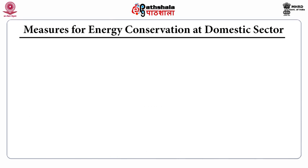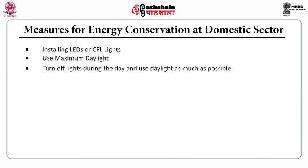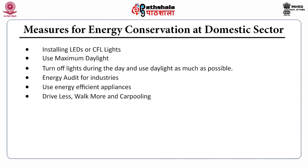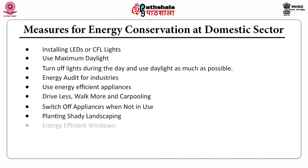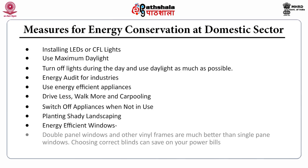What measures can we take to conserve energy at the domestic level? These include installation of LEDs or CFL lamps, maximum use of daylight, turning off lights during the day, energy audits for industries, use of efficient energy appliances, carpooling, driving less and walking more, switching off appliances when not in use, planting shady landscaping, and using energy-efficient windows — double-panel windows with vinyl frames are much better than single-pane windows. Choosing correct blinds can also save on power bills.